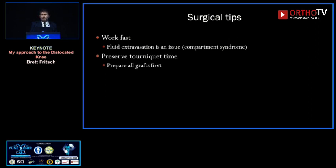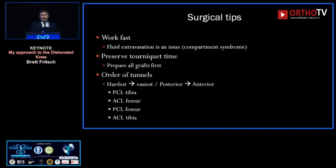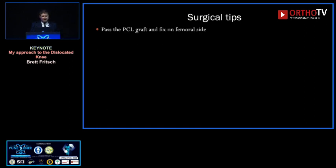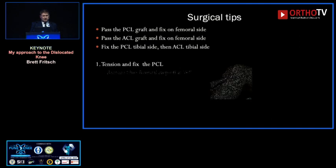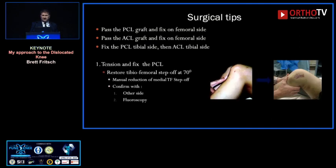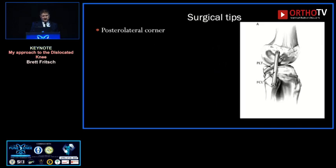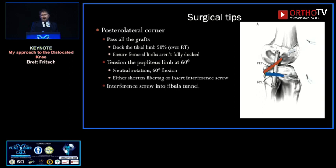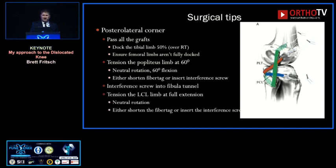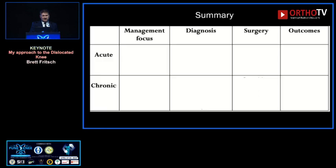In surgery: work fast — fluid extravasation is an issue. Preserve tourniquet time by preparing your grafts first. I do tunnels hardest to easiest, working from the back of the knee forward: PCL tibia, ACL femur, PCL femur, ACL tibia — just back to front. Pass and fix the PCL on the femur, same for the ACL, then reduce the step-off and fix it. Then it looks like a knee again — cycle and refix as needed. Pass the grafts in a complex weave, half-hitch them, tension with TightRopes, then fix with screws.